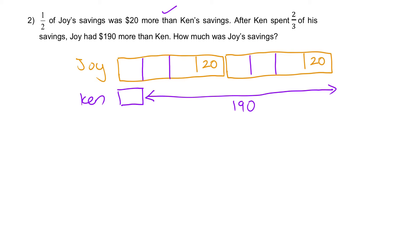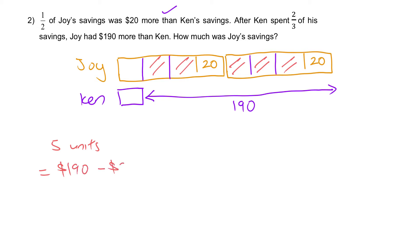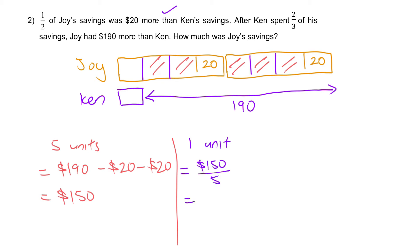From this analysis we can see that five units are equal to $190 minus $20 minus $20. That gives us $190 minus $40, which equals $150 — a very nice number. From here we can figure out what one unit is: $150 divided by 5 equals $30. So every unit here is $30.